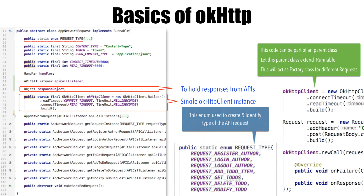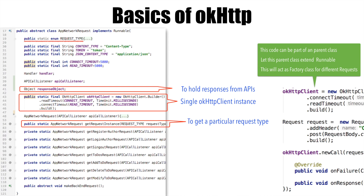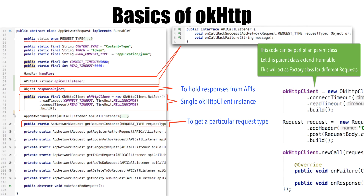The first instance you will see is there is a method called getRequestInstance. The first argument it takes is a RequestType. Depending upon the request type, we decide which particular AppNetworkRequest object we will be instantiating. The next part is APICallListener. This is nothing but a callback interface. It has two methods: onCallbackSuccess and onCallbackFailure. Any activity or fragment which wants to do API calls and respond to success or failure needs to implement this particular interface and override these methods.